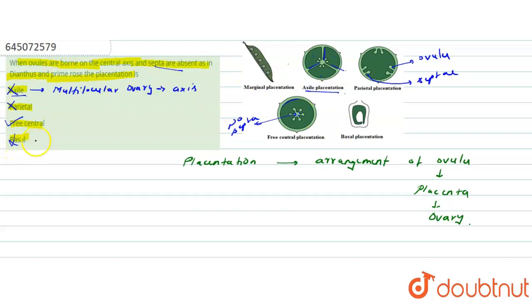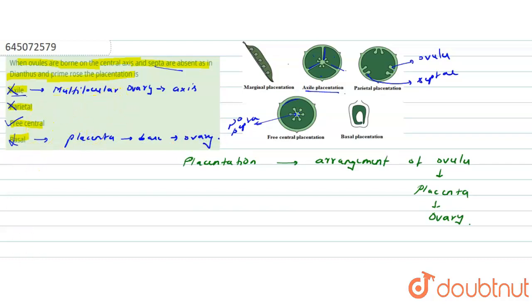The next option is basal placentation, which is also incorrect, because here the placenta is present at the base of the ovary. So the correct answer is option number three — free central placentation.